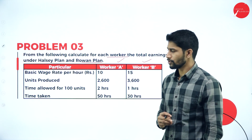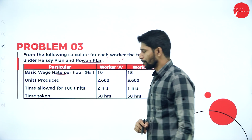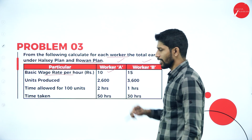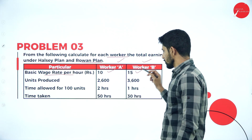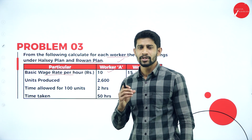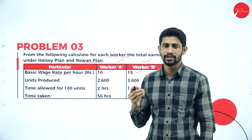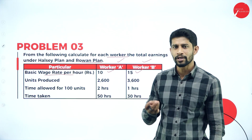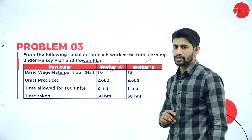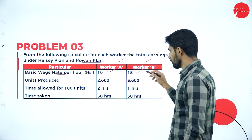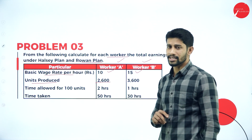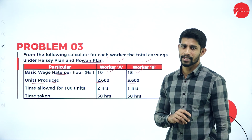The information given in the problem: basic wage rate per hour — they are paying 10 rupees per hour for worker A and 15 rupees per hour for worker B. It is not compulsory that they pay equal wages to all employees; it is up to the employer. Units produced: worker A produced 2600 units and worker B produced 3600 units.